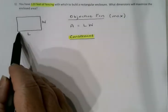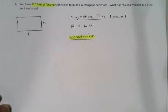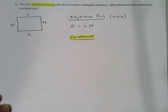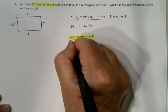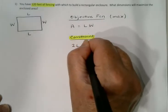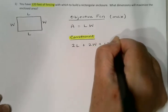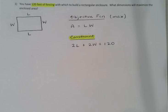Our constraint is the fact that we only have 120 feet of fencing to work with. If I'm building this whole rectangular pen with 120 feet of fencing, I'd have to do two Ls and two Ws. So my constraint is 2L + 2W = 120 feet of fencing.